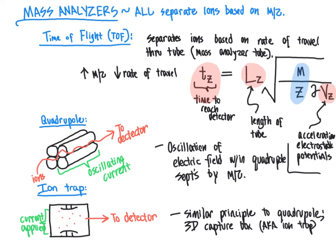With that, we have covered the three types of mass analyzers — time of flight, quadrupole, and ion trap — looking at the key features of each. Ultimately, all three serve to separate ions based on their mass to charge ratios so that we can plot a mass spectrum for an organic molecule.